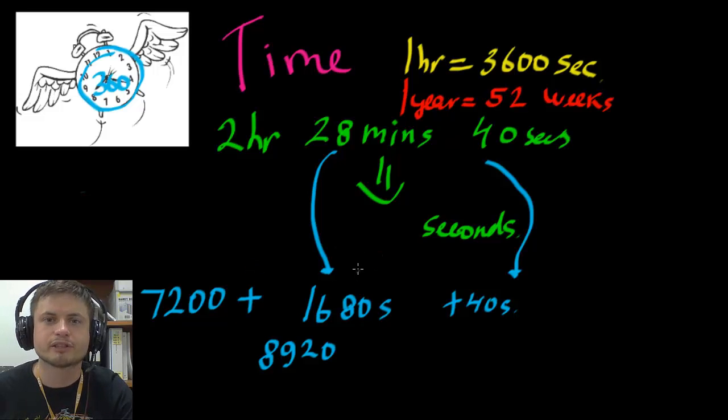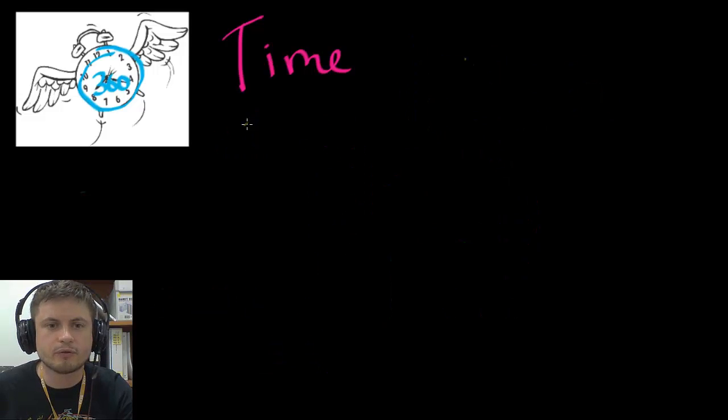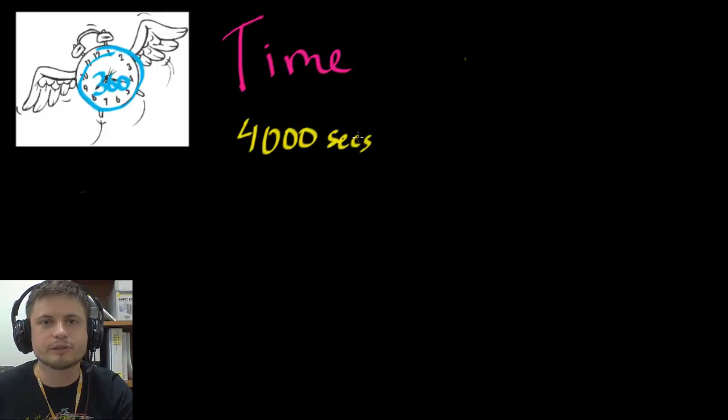But now let's look at the opposite. Let's convert seconds into minutes. So for example let's convert 4,000 seconds into hours and minutes. So how do we do this? Well this one is a little bit trickier because you have to try to start with the largest possible denomination which is hours. So if you remember correctly, one hour has 3,600 seconds.